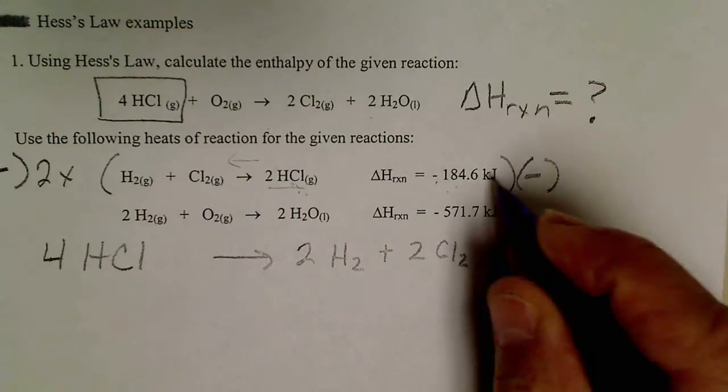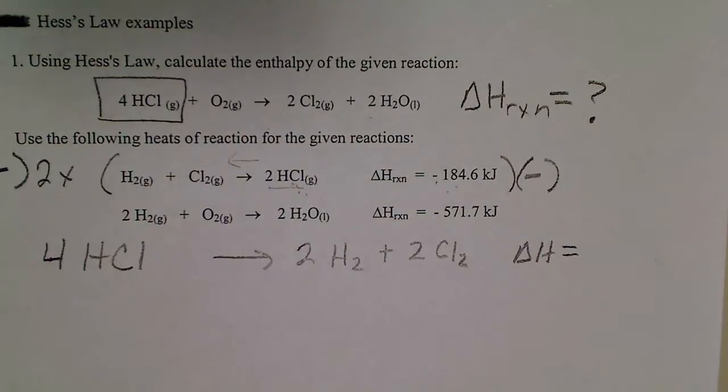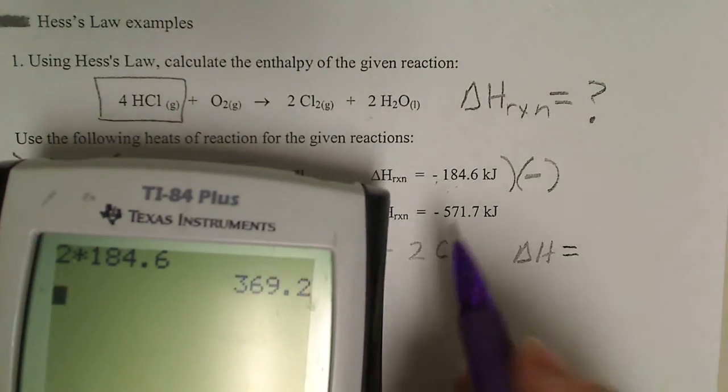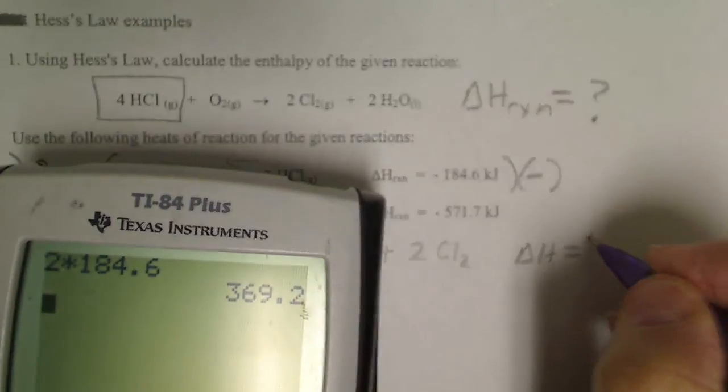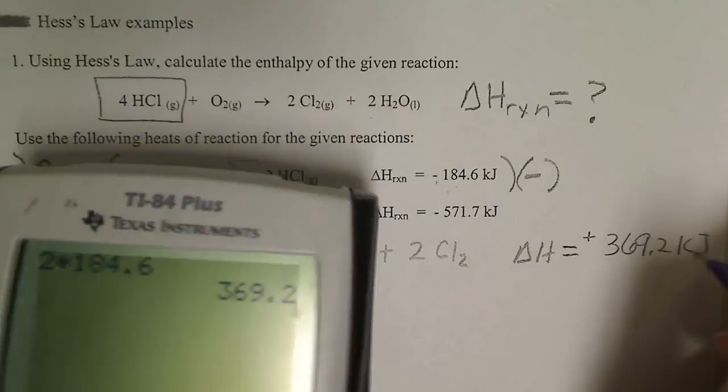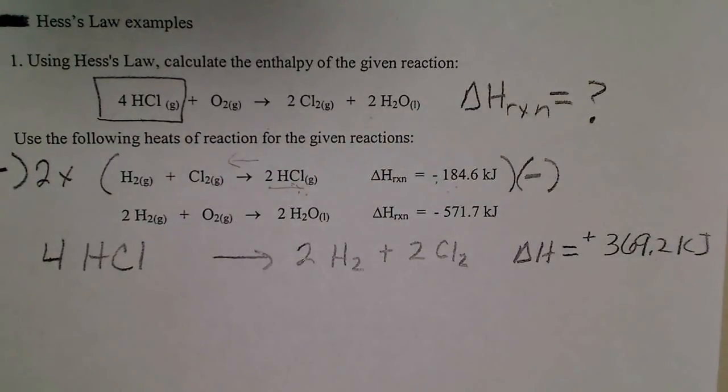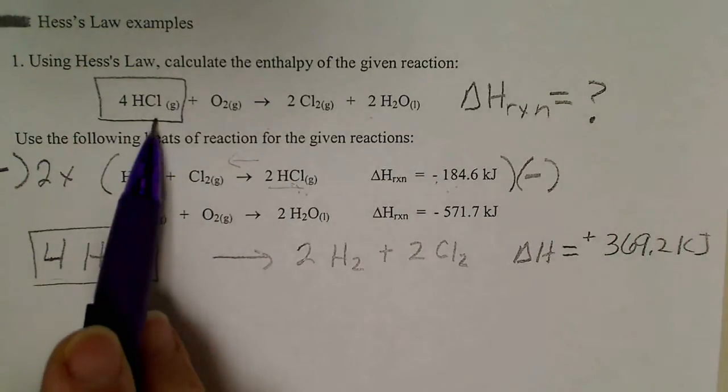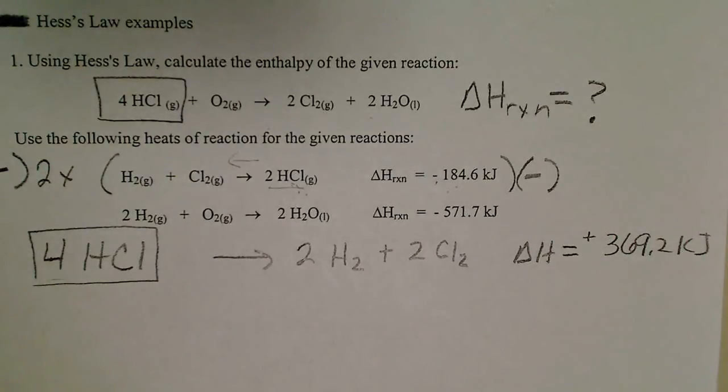So the delta H value for this reaction will be positive. Just do that on the calculator, two times 184.6. So if we do that, double that value, change the sign, we'll have a positive 369.2 kilojoules. And the whole purpose for doing that was to obtain four moles of HCl gas on the left.